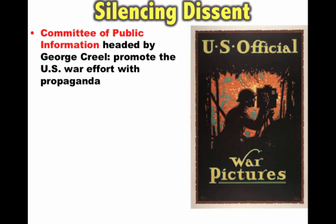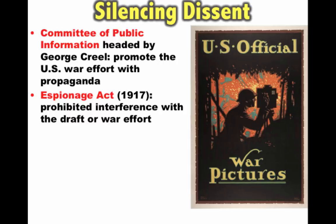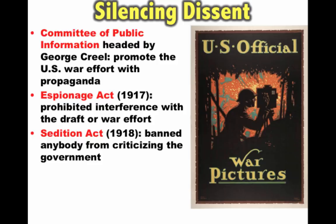For those people that tried to oppose the war, different laws were put in place. The Espionage Act of 1917 prohibited interference with the draft or the war effort — you could actually be put in jail. The Sedition Act was passed in 1918 and is much more broad. It banned anybody from criticizing the government — you could not speak ill of Congress, the President, the military, or the American flag. Nearly 2,000 people were arrested, many put in jail, such as Eugene Debs, for violating the Espionage and Sedition Acts.